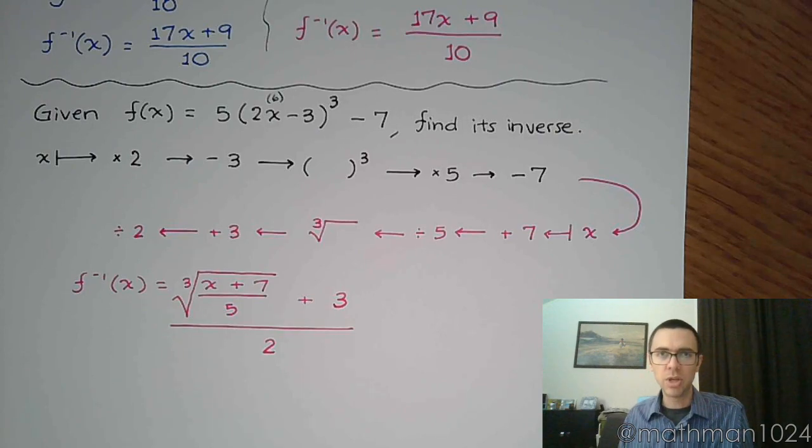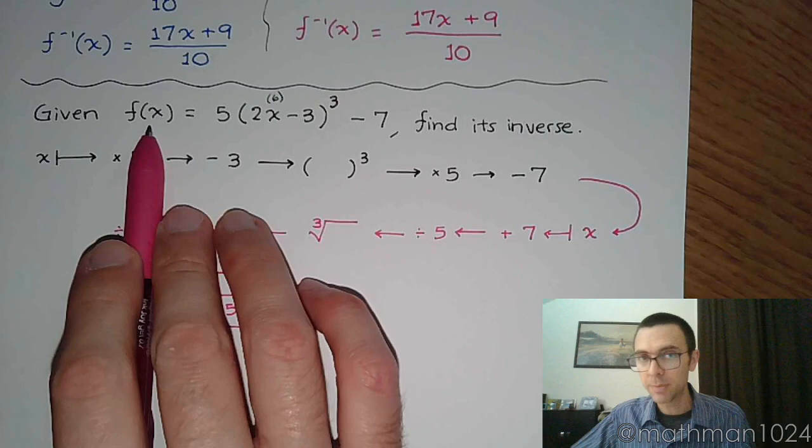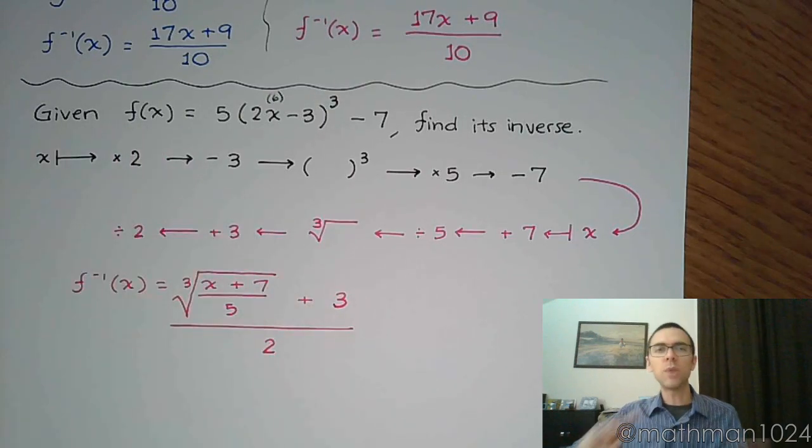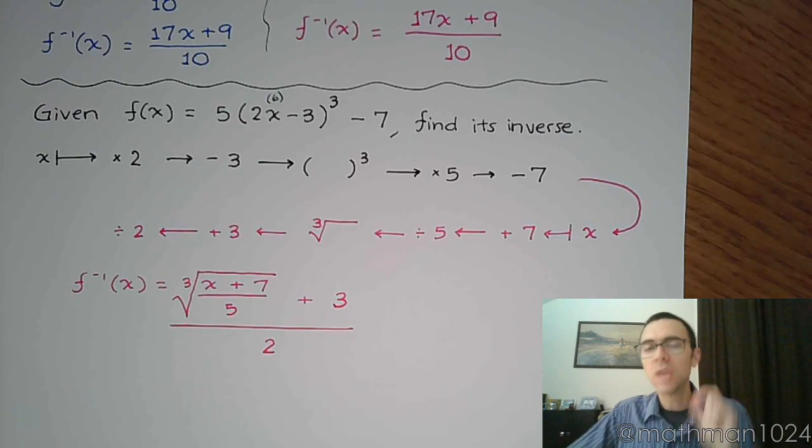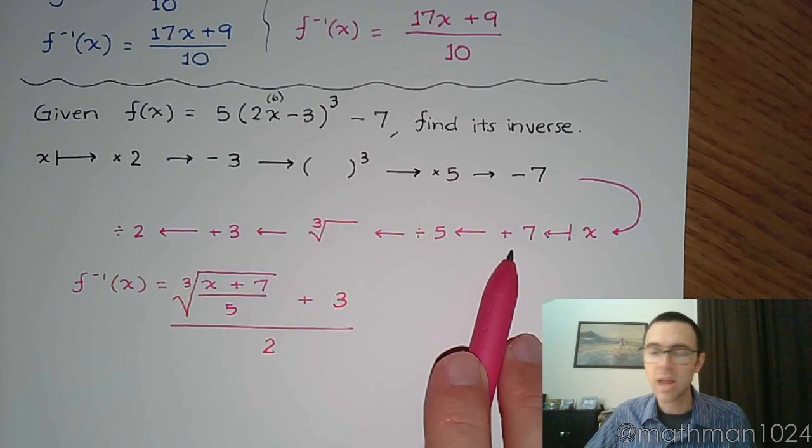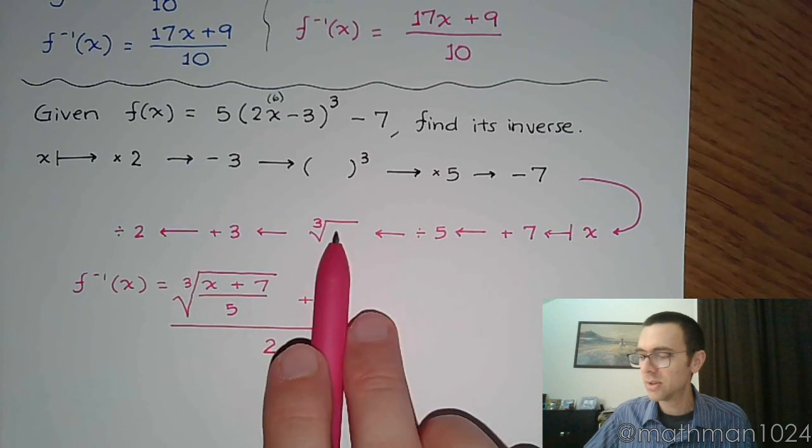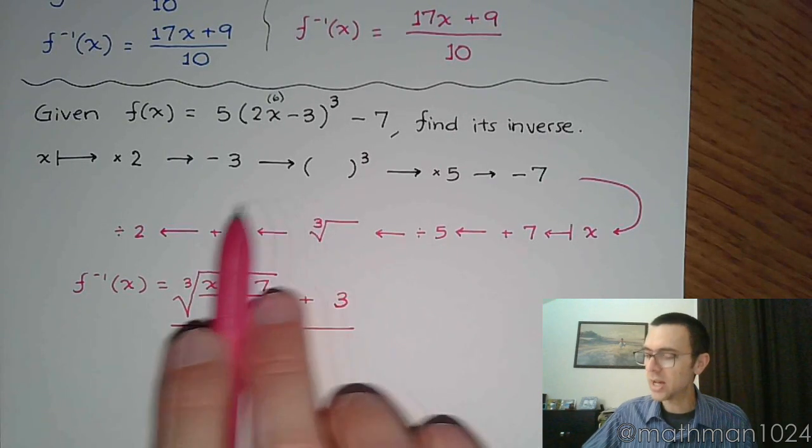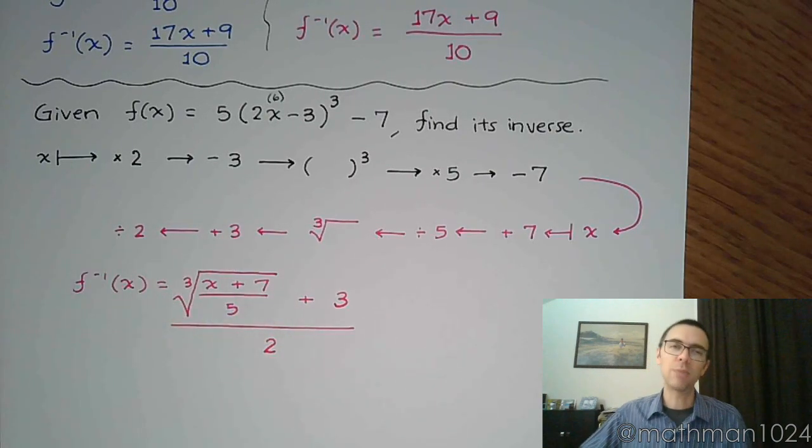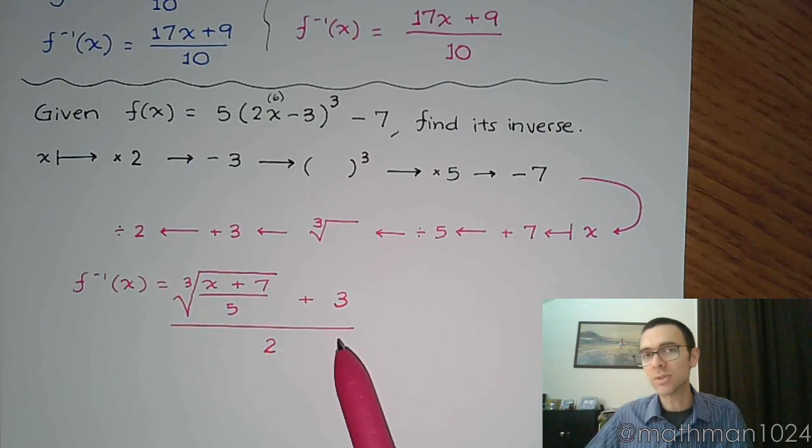Now, again, if you don't like what I'm doing here, you can do the traditional algebraic way where we rewrite this as y, and then you swap the x's and the y's, and you solve for y. And you'll see that when you solve for y, the first step that you would do would be to add 7. After that, you would divide by 5, then take the cube root of both sides, then you would add 3, and divide by 2. And you'll get the same answer that I have here.